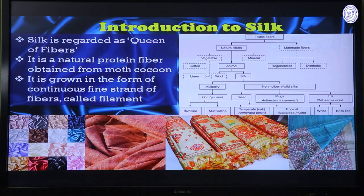Today we will first talk about the properties of silk. We should remember that silk is considered the queen of all fibers — a very noble kind of fiber obtained from natural sources, specifically from silk moth cocoons. This particular cocoon consists of two different types of proteins: fibroin and sericin.